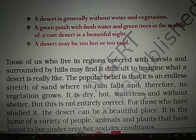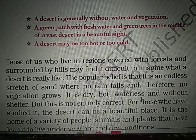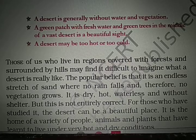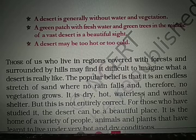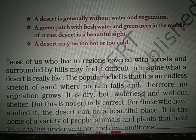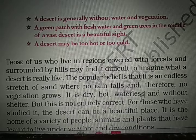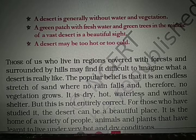Simultaneously, a desert is described as dry, hot, waterless and without shelter. It is a dry area, it is a hot place, it is waterless — there is no water — and one cannot find any shelter to take rest. There will be sand and sand. But this is not entirely correct. The author wants to say this definition is not complete.